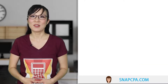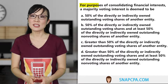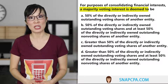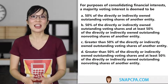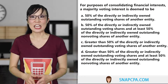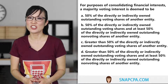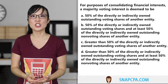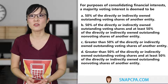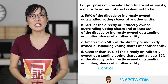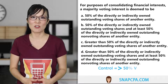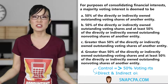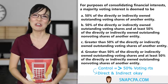Let's try a multiple choice question. The question reads: for purposes of consolidating financial interests, a majority voting interest is deemed to be. Before reading the choices, let's form an answer. In the context of consolidations, ownership centers around control, which means we need more than 50% of the voting rights. And ownership can be direct, indirect, or some combination of the two.